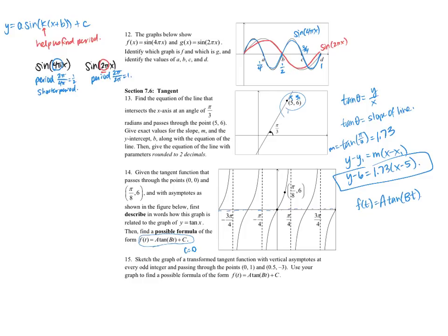And b deals with the period of this function. I know that the period is equal to the regular period, which is pi, divided by b. And in this case, our period here is from negative pi over 4 to pi over 4, so that's pi over 2. So pi over 2 equals pi over b, which tells me that b equals 2.